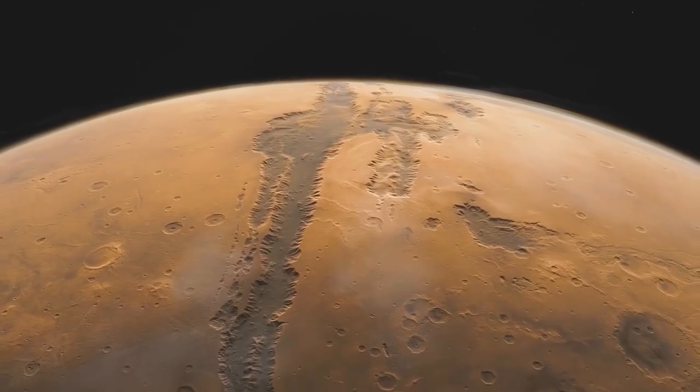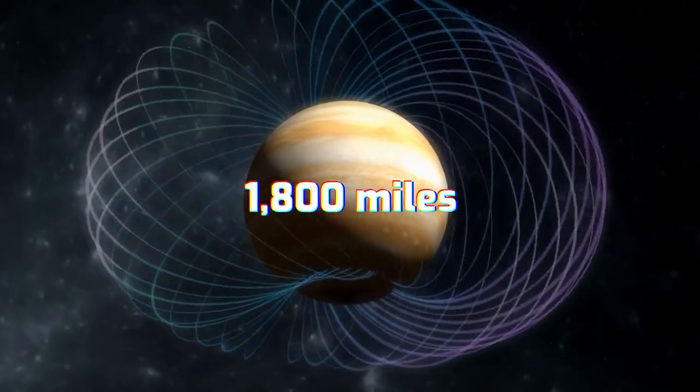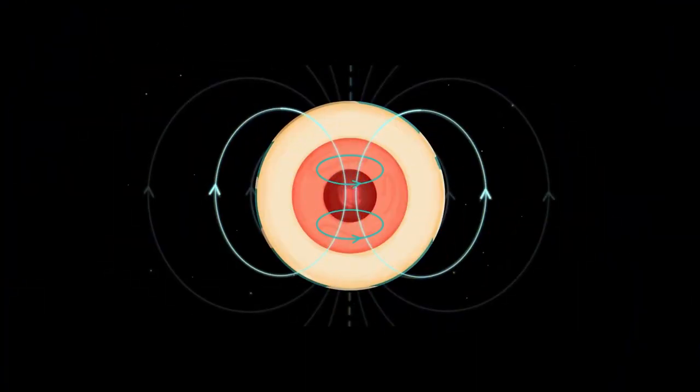The magnetic field of Earth is produced by the convection of molten iron in the planet's core, approximately 1,800 miles beneath our feet. This superheated liquid generates electric currents, which cause electromagnetic fields to form.